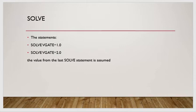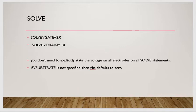Here, vgate is applied as 2 volts and vdrain as 1 volt. The source will default to zero if not specified — you don't need to write 'solve vsource=0'. Similarly, if vdrain is also zero, you don't need to write that either. You don't need to explicitly state the voltage on all electrodes in every SOLVE statement; if a substrate voltage is not specified, it defaults to zero.